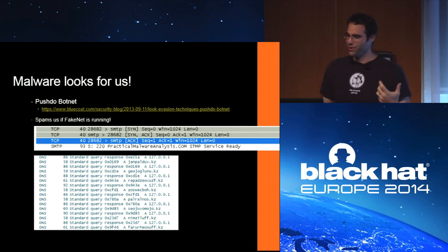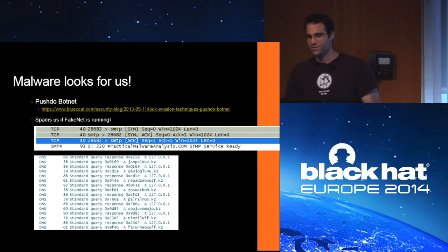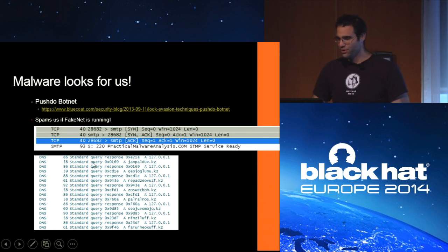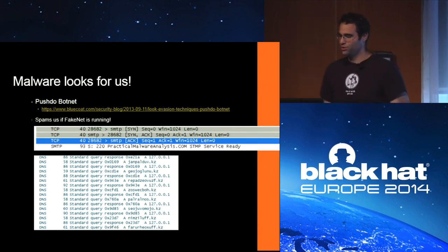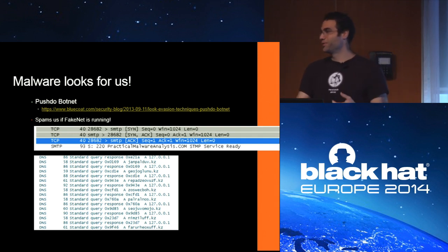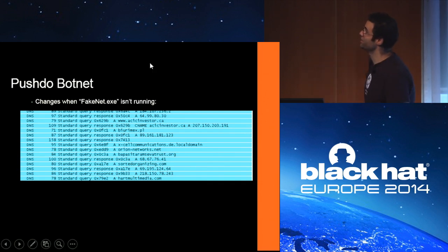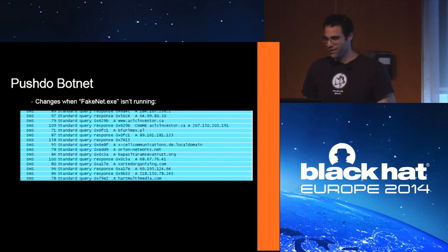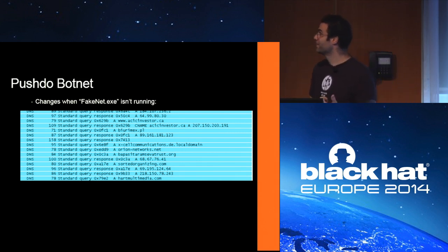You know your tool has made it when botnets start looking for you. This is from a Blue Coat security advisory about the PushDo botnet. When running it with FakeNet for analysis, after a bunch of random-looking query requests, it would actually try to make an SMTP connection to PracticalMalwareAnalysis.com — the website for the book. That's because it was looking for FakeNet. If you run it without FakeNet you see it uses different addresses. It was just looking for FakeNet.exe, so it wouldn't be hard to get around.